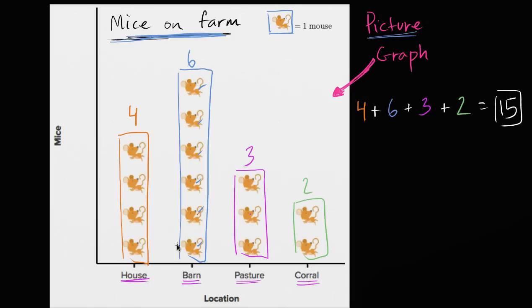Someone said, how many mice in the barn? You say, okay, well, you know, there's six mice. If someone says, how many mice are in the pasture and the corral combined? Well, that's going to be the three in the pasture plus the two in the corral, or five.